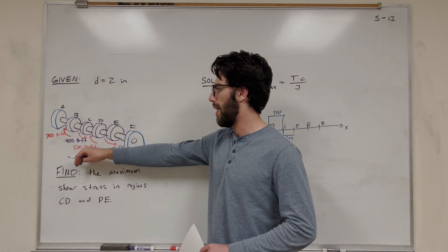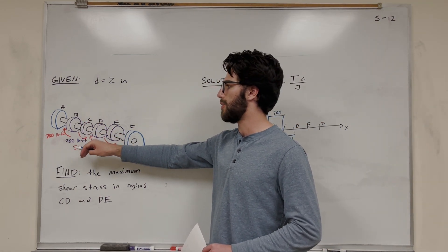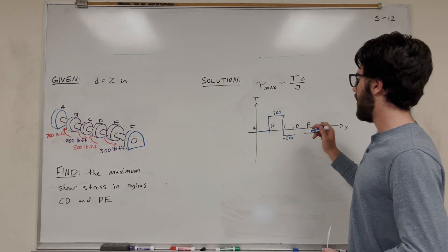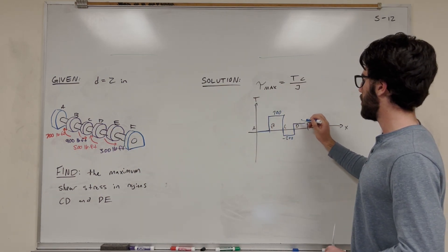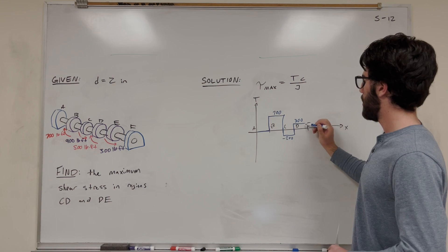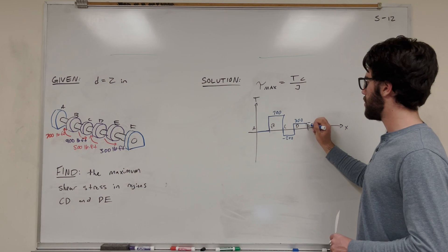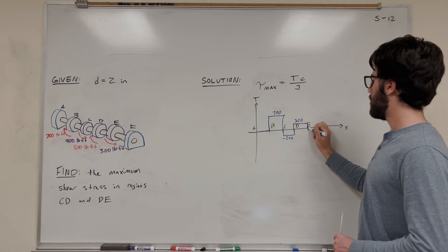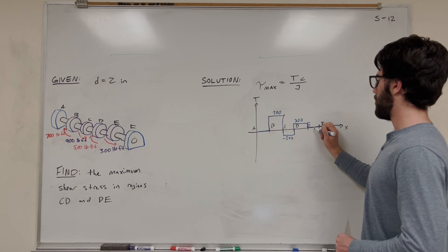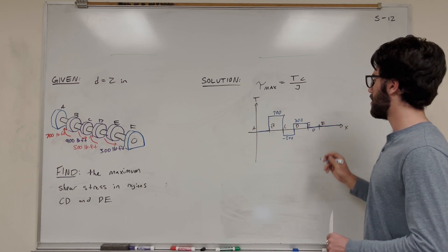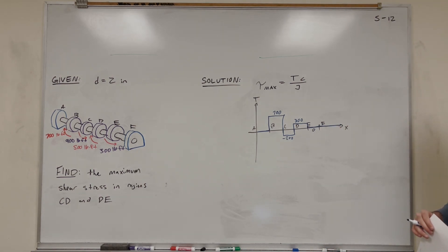Then at D, we have 500 pound-feet, and it's going the other direction, going positive. So we're going to add 500 to that negative 200 to get to 300. Then we have 300 pound-feet at E, and that's going to push us back down to 0 because it's pushing against that positive. So we're going to be at 0 from E to F, and 0 at F.